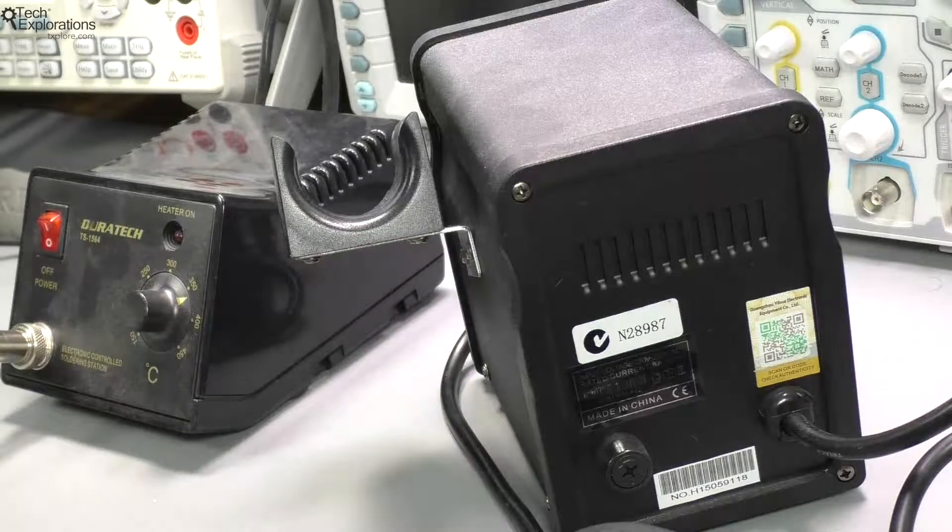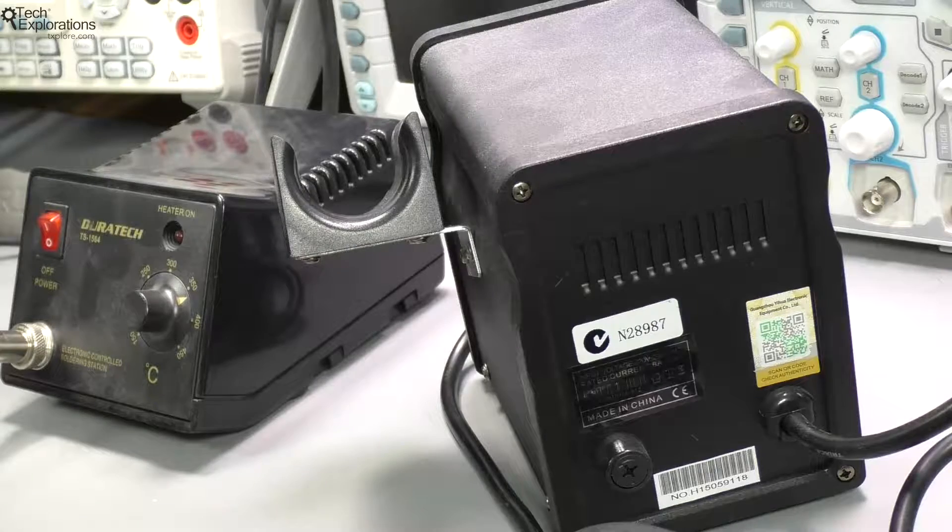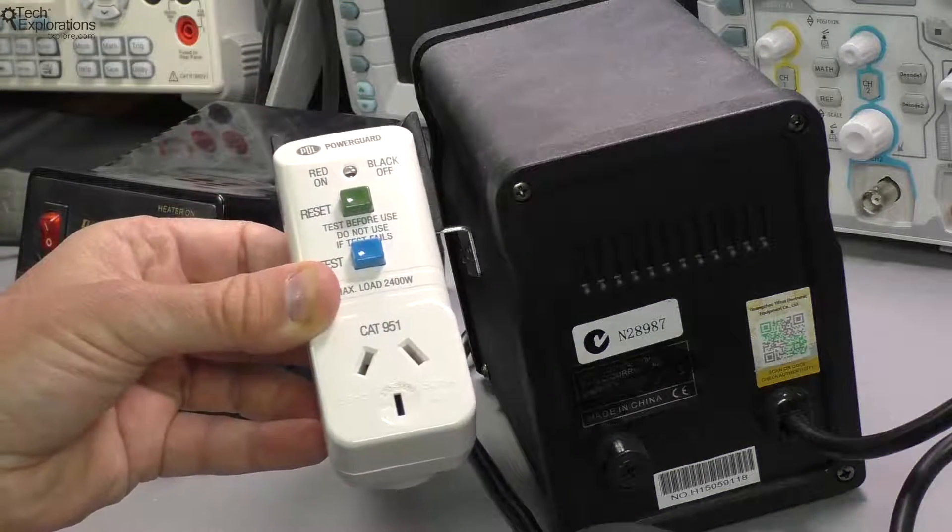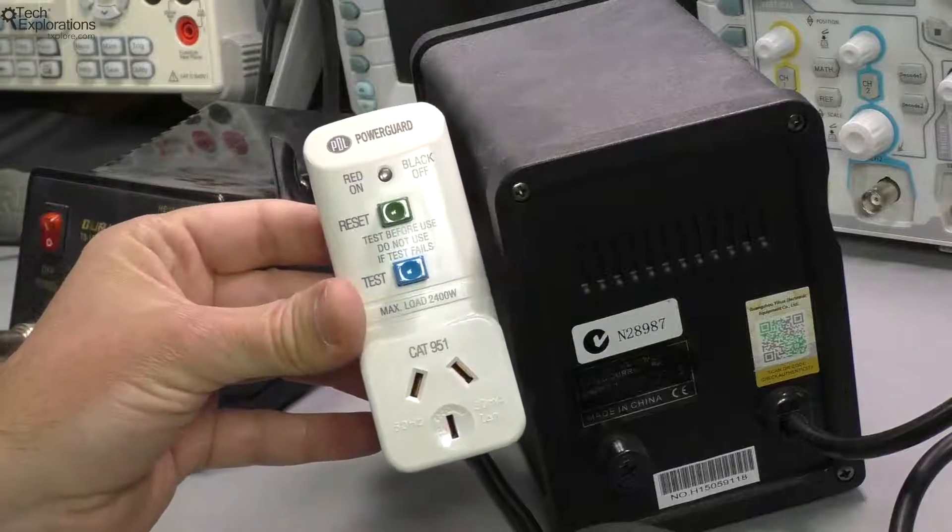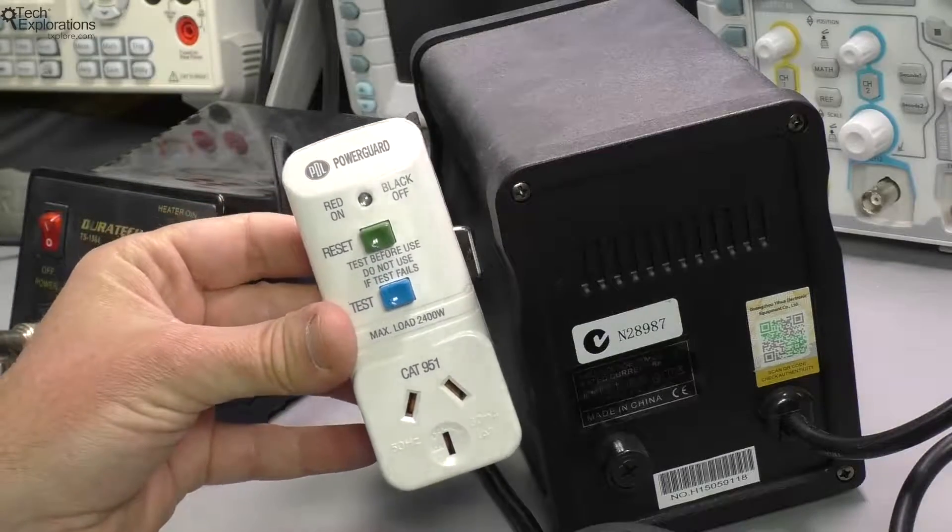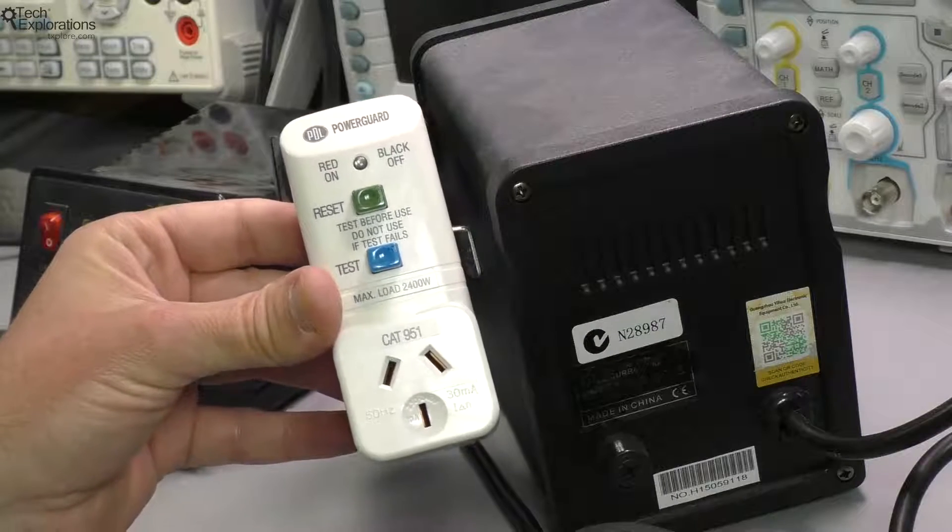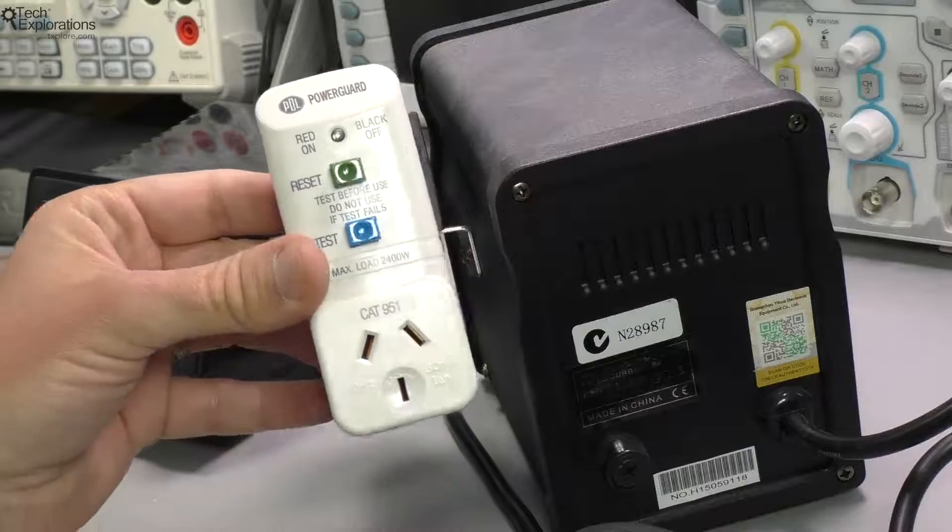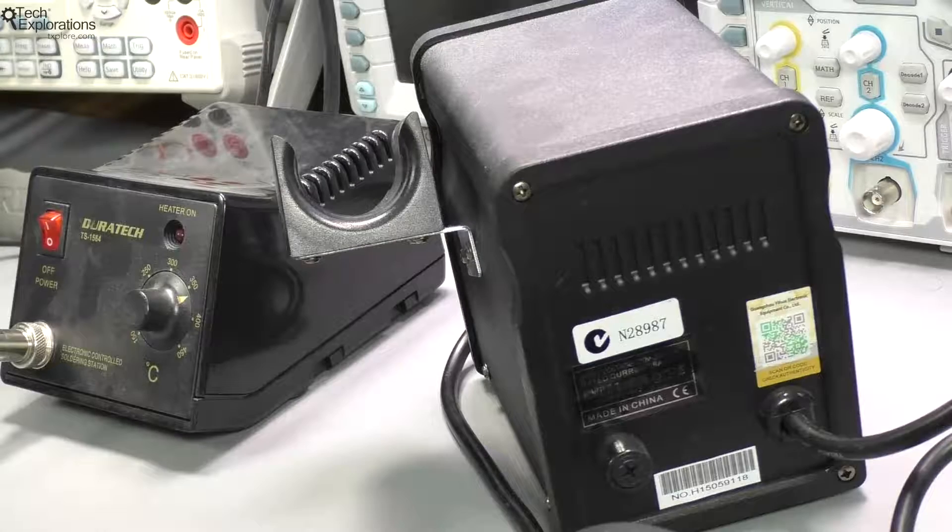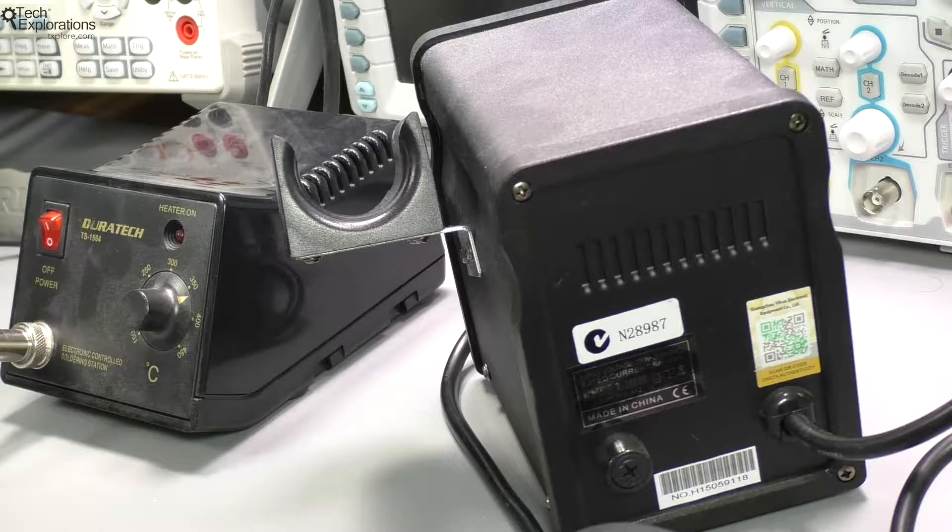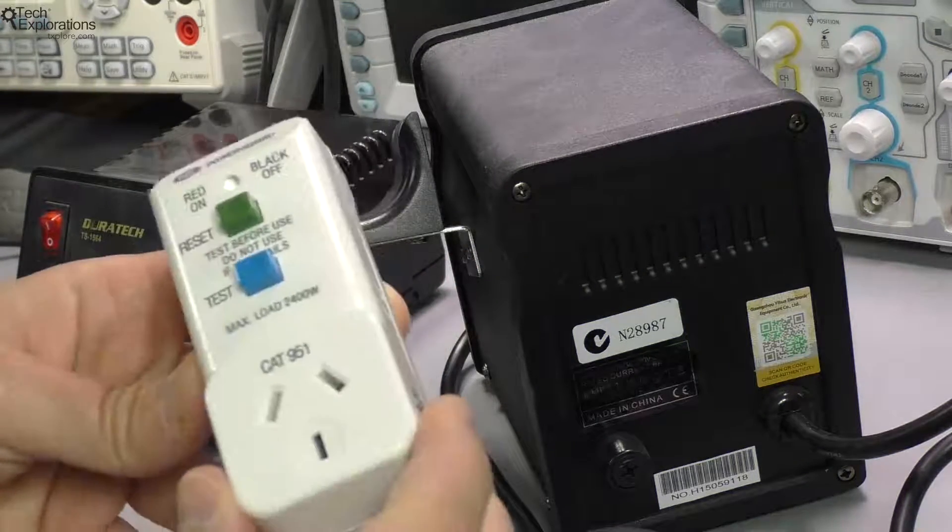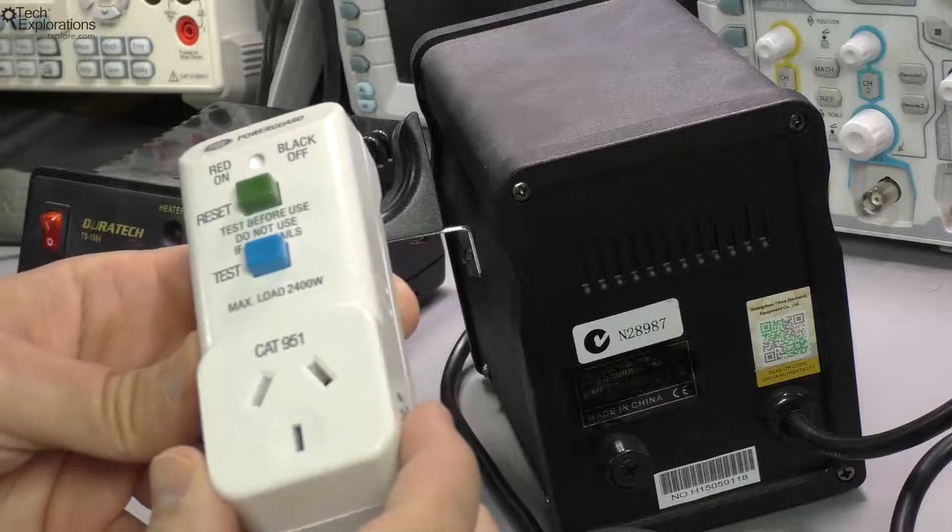I'll be talking more about residual current devices in a separate lecture because it's a very important topic. You need to take all the various precautions and make sure that your home has got one of these things in its fuse box. In Australia at least, after the 1990s, every new home must have these devices in its fuse box. The one that I'll be using here is just an additional layer of protection. Let's move on to the next lecture now where I'd like to talk a little bit more about this device, the residual current device.